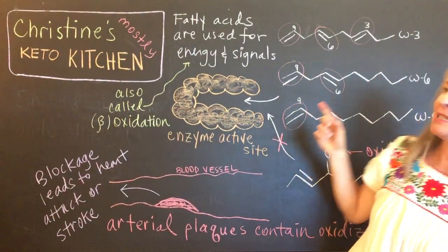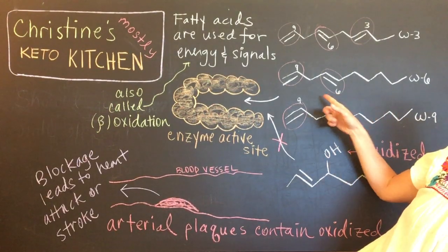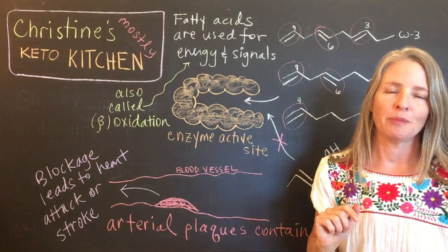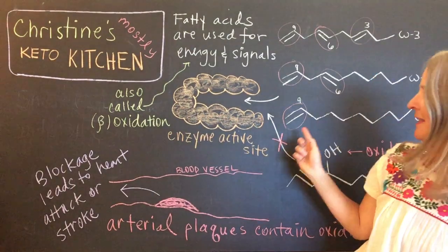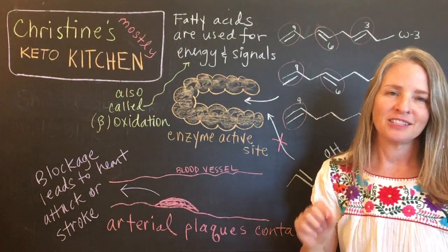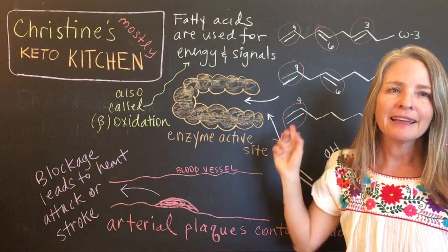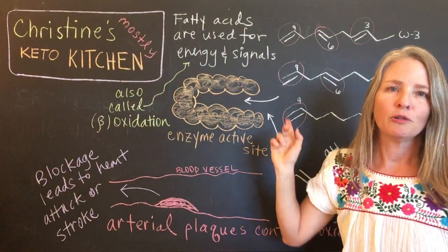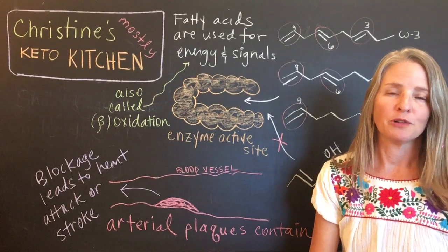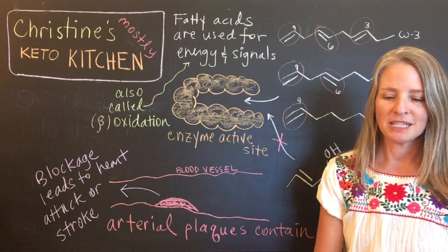So then omega-6 — the first double bond happens at the six carbon from the end, so there's a double bond at the six and then also up at the nine. And then omega-9, that's what we call monounsaturated, because it just has the double bond only at the nine position. That's what olive oil and avocado oil are — predominantly monounsaturated with the one double bond at the omega-9 position.